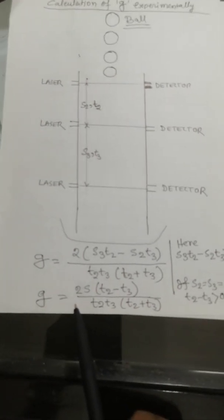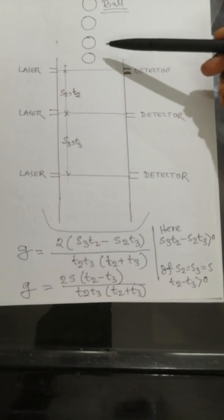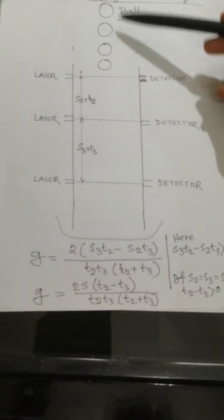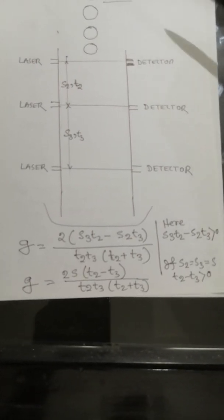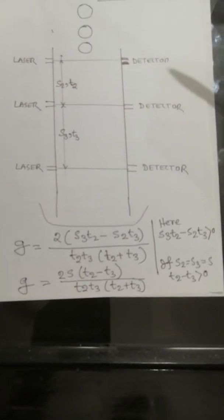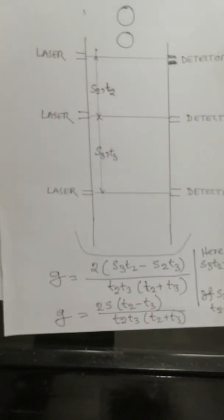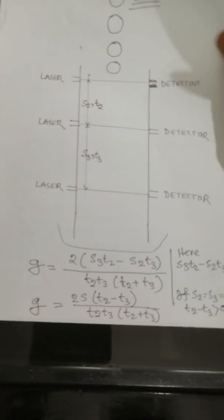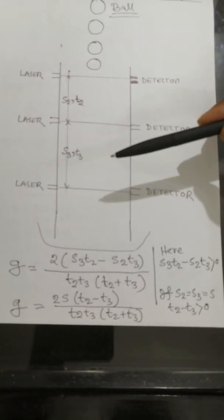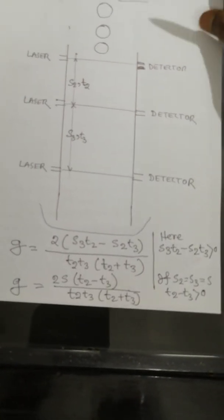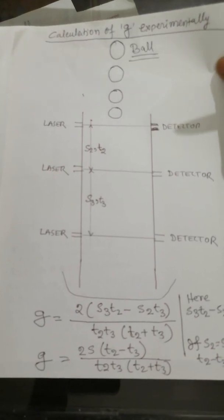So with this equation we can find g by dropping any object from any position above the first detection line. We have to remember that as the object falls in the air, its weight should be a little bit higher — it should be a heavier object.